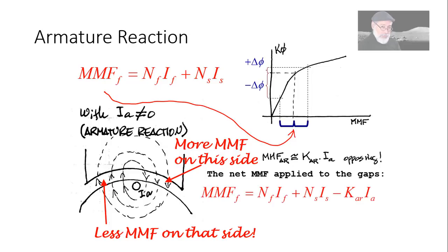And we say that the net MMF applied to the air gap now is NF·IF from the field coil plus NS·IS from the series coil minus the armature reaction, a value proportional to the current in the armature.